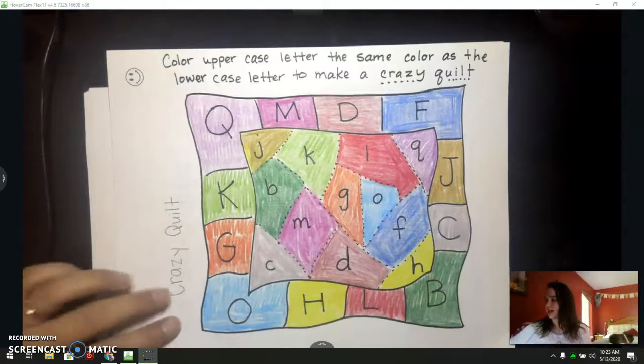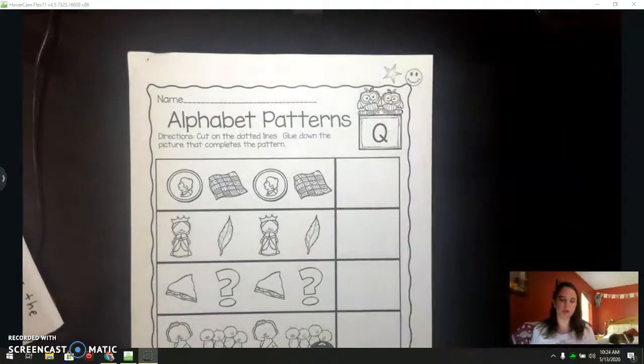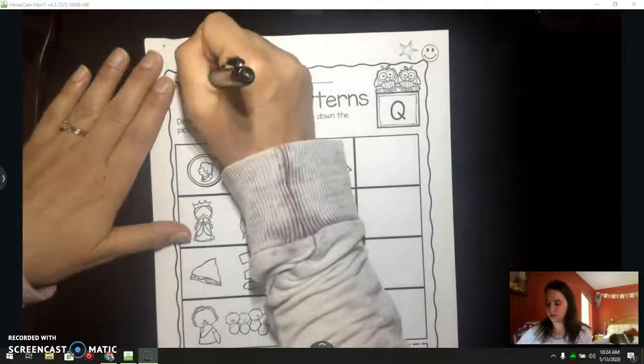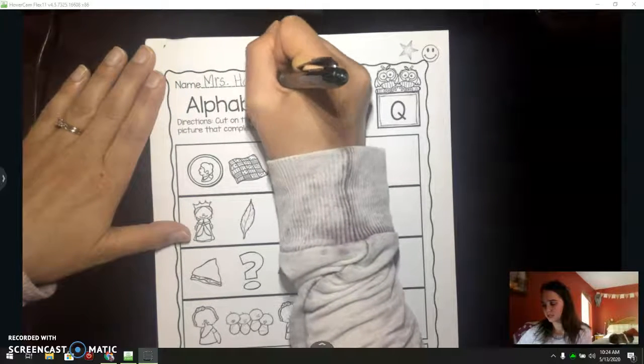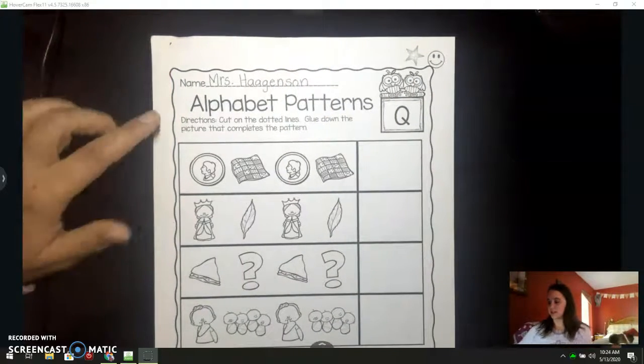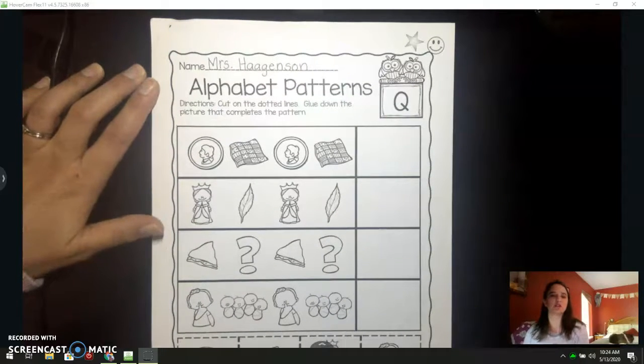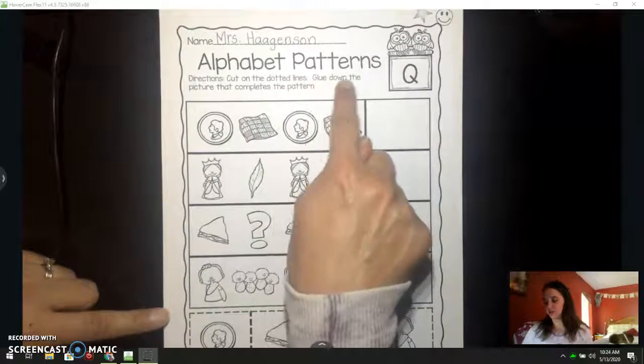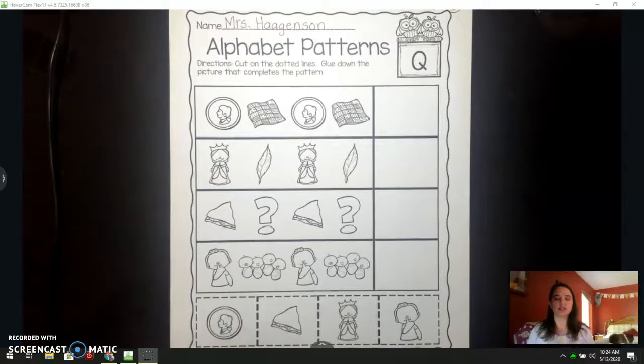Good job. Our next page is a cutting page. So you have to tear it out of the back, and it has this star on it, so we know it's a cutting page. First thing I do is always the same. I pick up a pencil and write my name, right there on the line that says name. This page says alphabet patterns, and now we're talking about Q, like quail and quilt. My directions say cut on the dotted lines, glue down the picture that completes the pattern. So I'm going to read the patterns, and I want you to tell me what comes next.